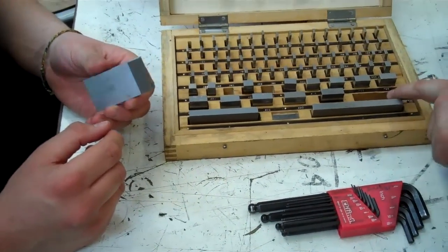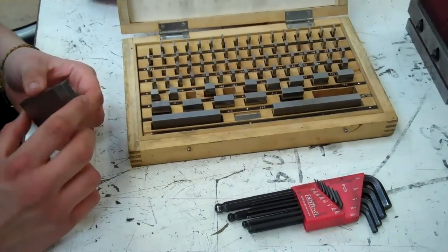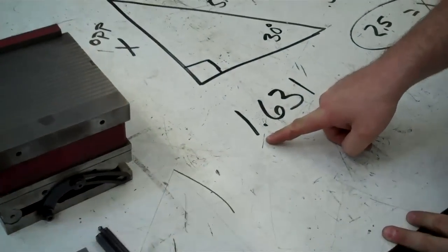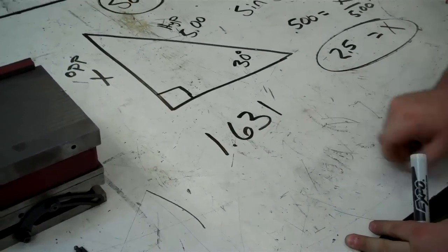Now, that was a fairly easy one. We picked the 2 inch and we picked the 1/2 inch. What if we had a number, though, that was a little bit different, like 1.631?